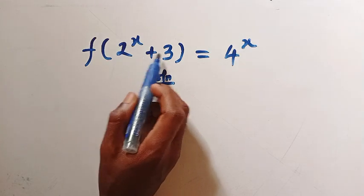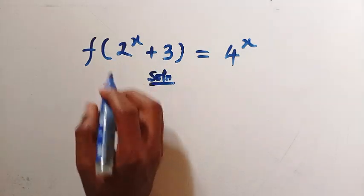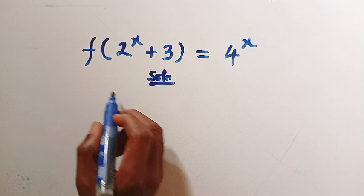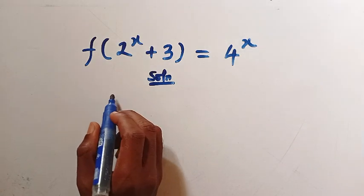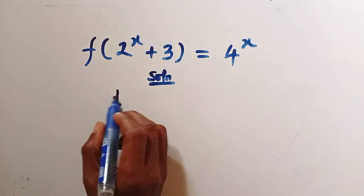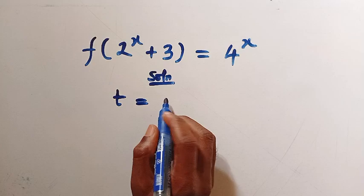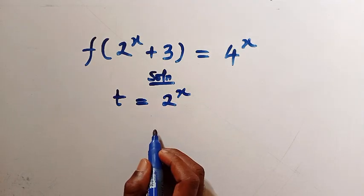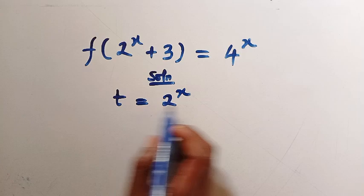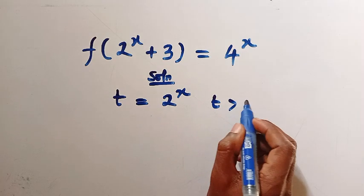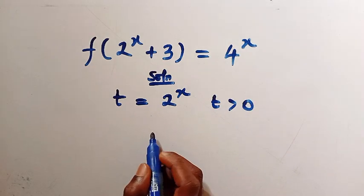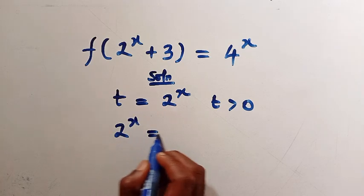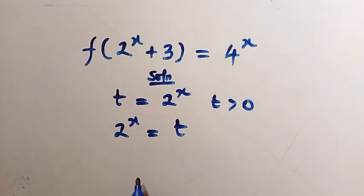Let's use a substitution method. Let t = 2^x, where t is greater than zero. We can write this as 2^x = t.